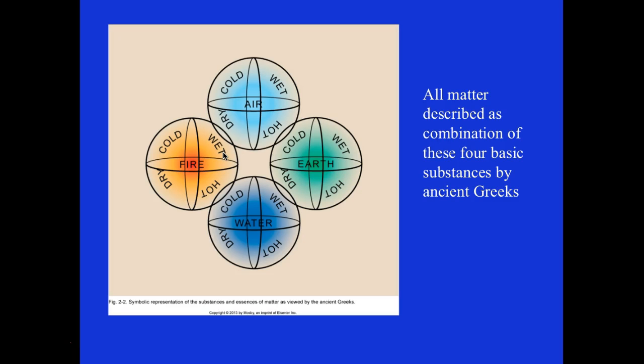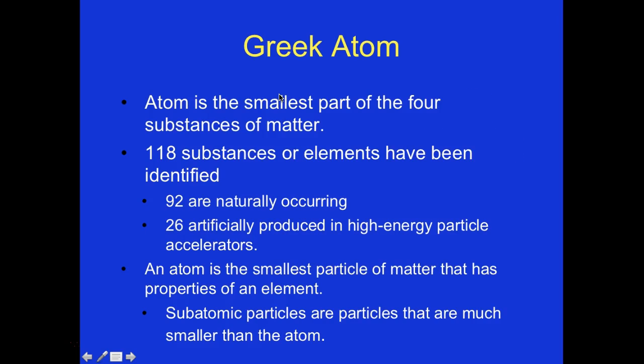All matter was described as a combination of four substances by ancient Greeks. Before B.C., they saw air, earth, water, and fire as the four different elements. The Greek atom was the smallest part of those four substances. Since then, 118 substances or elements have been identified — 92 naturally occurring and 26 artificially produced in high-energy accelerators. We've come a long way from four elements to 118.